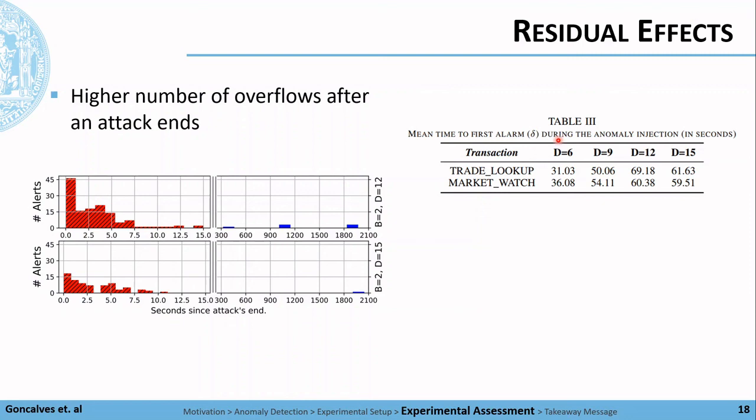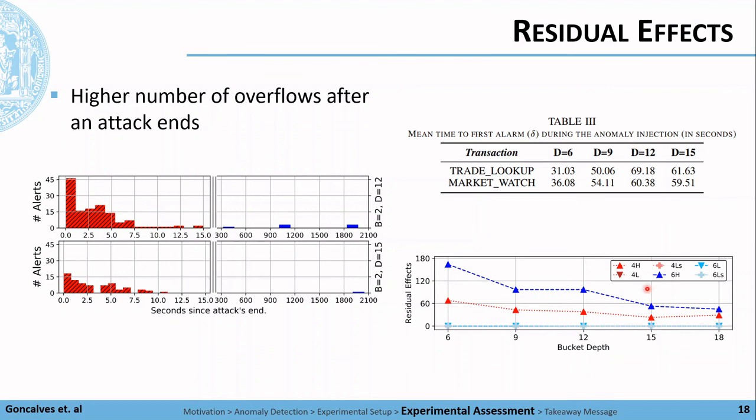We proposed a simple rule to determine when a set of alerts should be aggregated into a single alarm. We accounted for the mean time to the first alarm under an attack period and used this value as a threshold. In this table, since we are using the mean time from all failure modes, the higher the d, the greater is the chance that some alarm would not happen, and then the lower value in the column d equals 15 is expected for these two transactions.